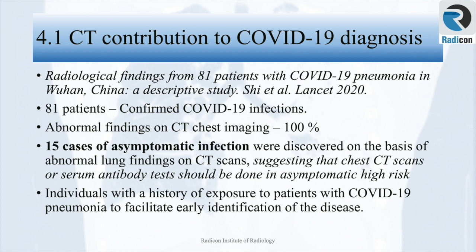Radiological findings from 81 patients with COVID-19 pneumonia in Wuhan, China was a landmark study published in The Lancet. The study found abnormal CT chest findings in all 100% of cases. Fifteen asymptomatic cases were discovered on the basis of abnormal lung findings on CT scans, suggesting that chest CT or serum antibody tests should be done in asymptomatic high-risk individuals with a history of exposure. In the early days of COVID, Chinese data suggested CT chest as a very promising diagnostic tool in addition to gold-standard PCR testing, with the benefit of quick availability and faster results.